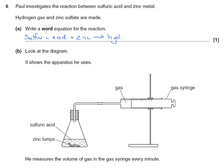Producing hydrogen — we won't bother writing 'gas' — plus zinc sulfate. Looking at the diagram, it shows the apparatus used: sulfuric acid in the flask along with some lumps of zinc, and we're collecting the gas in a gas syringe.